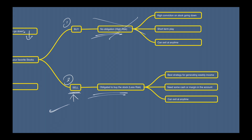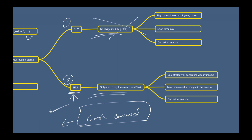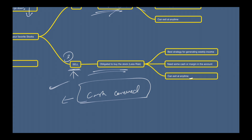Cash covered puts — selling a put — is the best strategy in my opinion for generating weekly, monthly, or daily income depending on the stock. You need some cash because they are cash covered, meaning you need to have cash in your account to cover the stock. You can also exit anytime — you don't have to wait until the expiration date. All these contracts have an expiration date, but you can exit at any time.